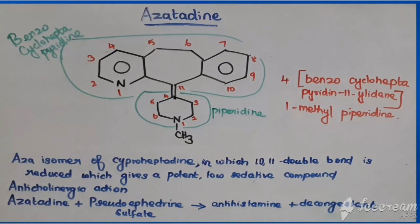If it is having a double bond, that should end with 'ene'. So that suffix is 'ene'. The 11th portion is connected to the fourth portion of piperidine, and it is connected to this carbon by means of a double bond. That is why it is called 11-ylidene.